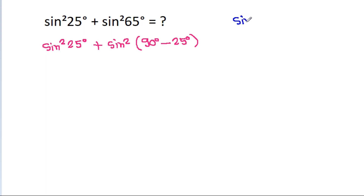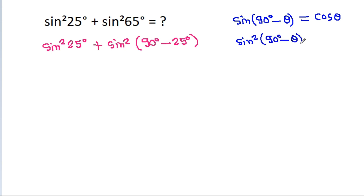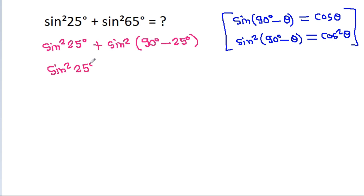Sin 90 degree minus theta is equal to cos theta, so sin square 90 degree minus theta will be equal to cos square theta. So it is sin square 25 degree plus sin square 90 degree minus 25 degree, which will be cos square 25 degree.